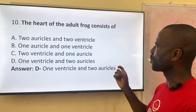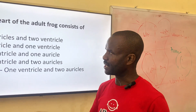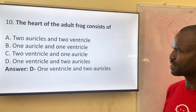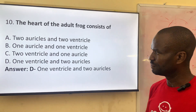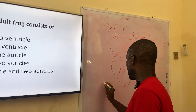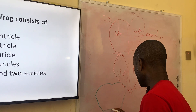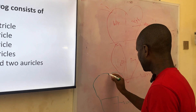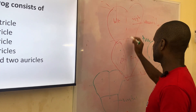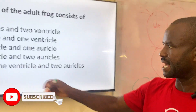Number ten: the heart of the adult frog consists of the following. The heart of a frog is actually divided into three parts. Option A: two auricles and two ventricles. Option B: one auricle and one ventricle. Option C: two ventricles and one auricle. Option D: one ventricle and two auricles. The heart of a frog or amphibian has the ventricle as just one, and the auricles are divided into two — so three compartments, unlike the mammalian heart with four. The correct answer is D: one ventricle and two auricles.